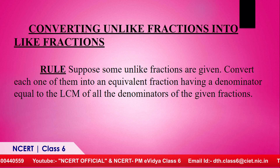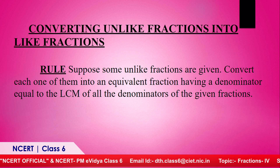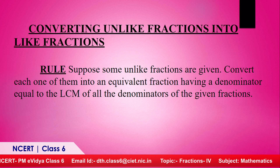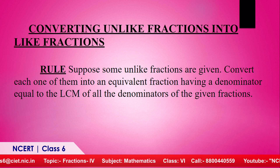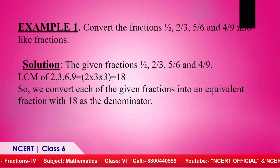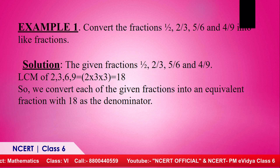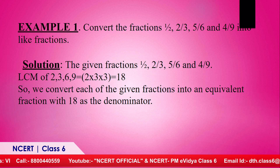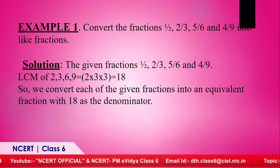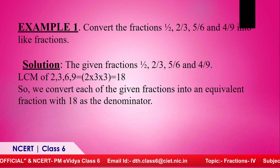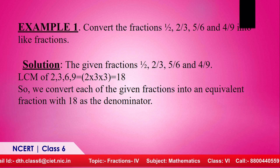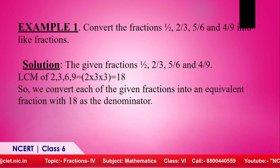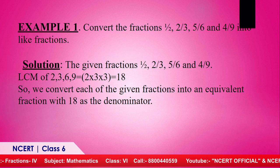To compare unlike fractions, we convert them into like fractions. The rule is: convert each fraction into an equivalent fraction having a denominator equal to the LCM of all the denominators. For example, to convert one upon two, two upon three, five upon six, and four upon nine into like fractions — their denominators are two, three, six, and nine. The LCM of these denominators is 18.